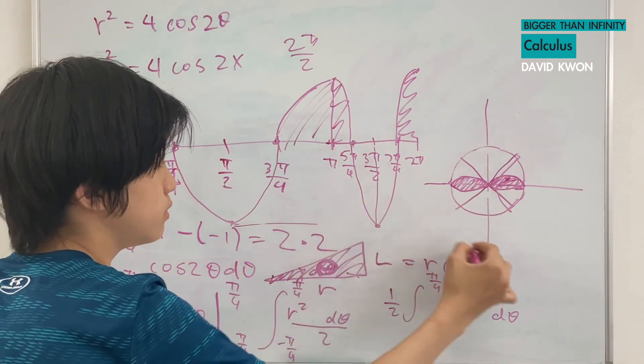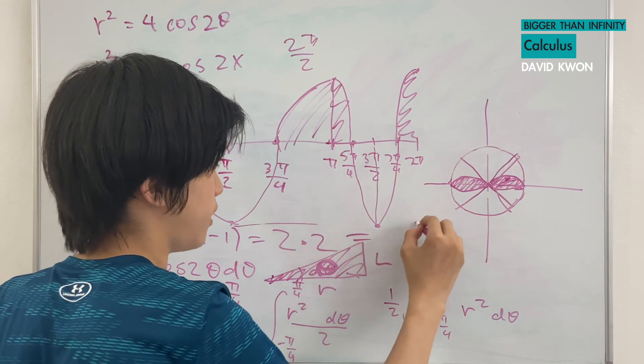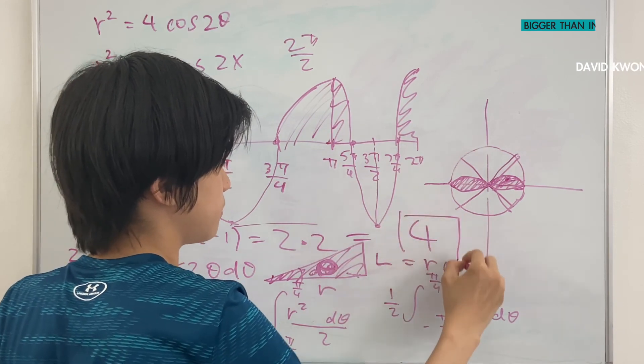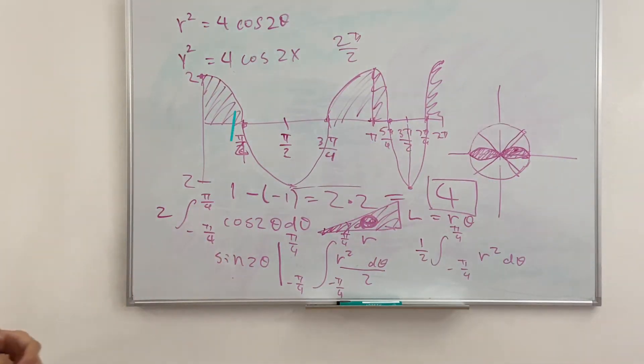And now, we just multiply 2, getting a 4. Let's put the answer right here. Okay.